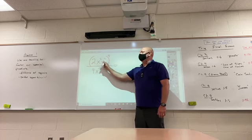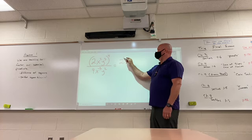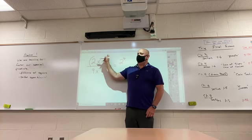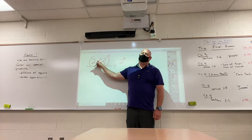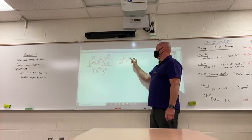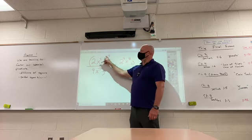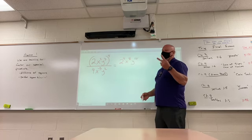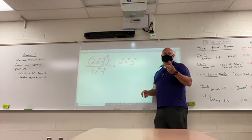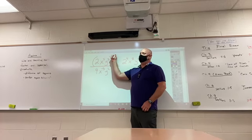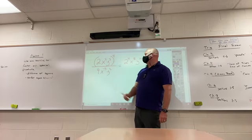Each part has to get that power. So that 2 has to get raised to the fourth power. This x squared has to get raised to the fourth power. And what do you do with powers raised to powers? You multiply, so that would be x to the eighth, and the y would be raised to the twelfth. So we've already used two properties: multiple things raised to the power, and powers raised to powers.